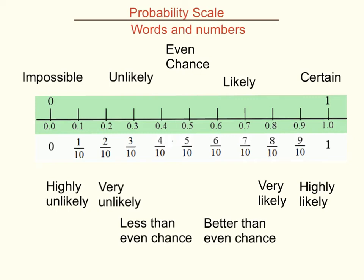In maths, probability is the maths that helps us work out the chance of something happening. To do that, we use a scale. The scale goes from 0 to 1, and every fraction in between tells us how likely something is to happen.